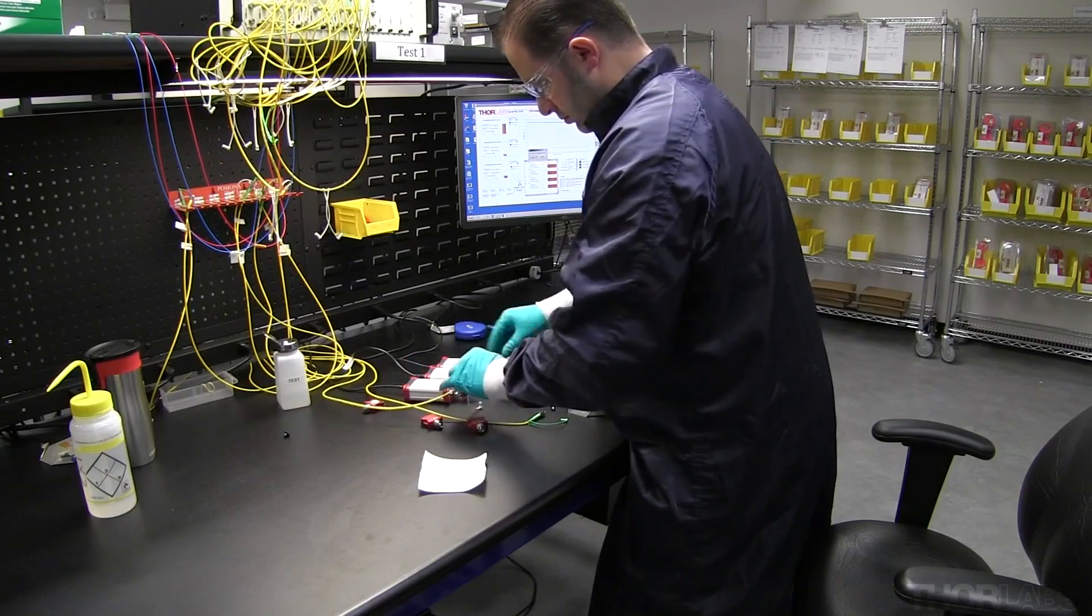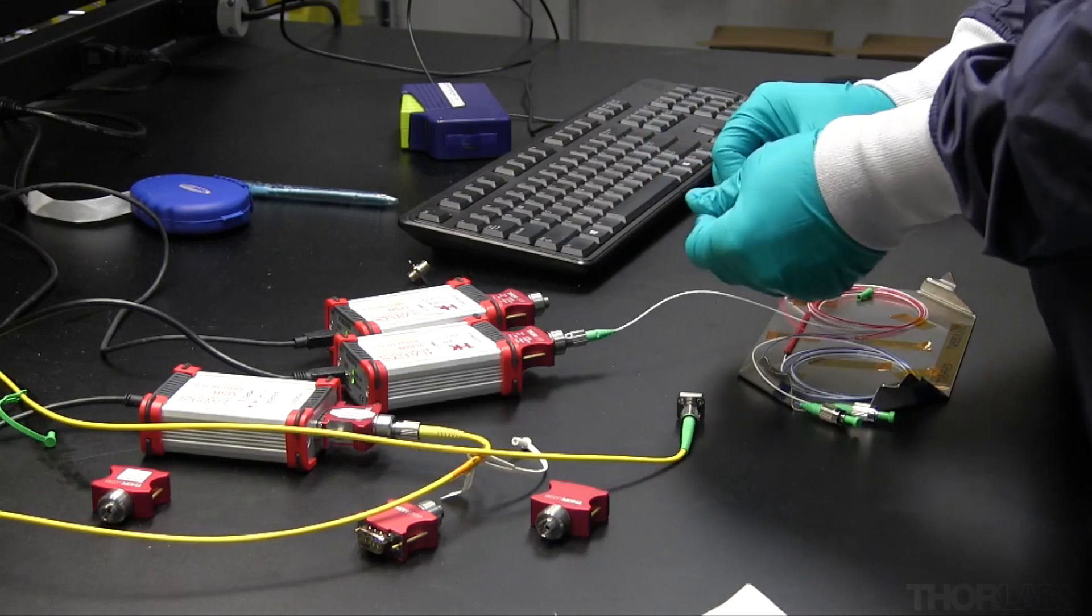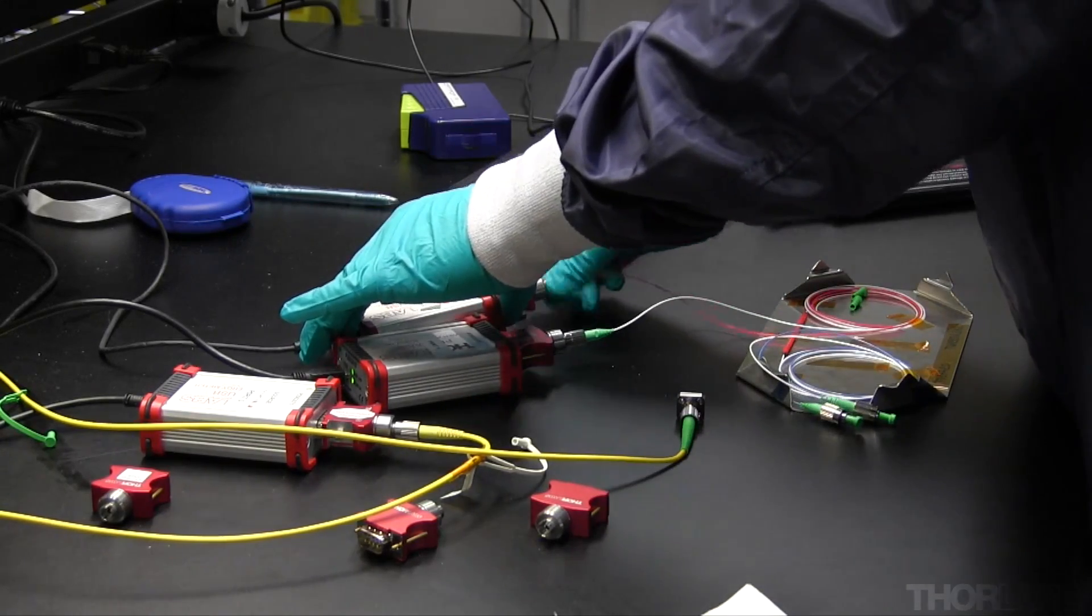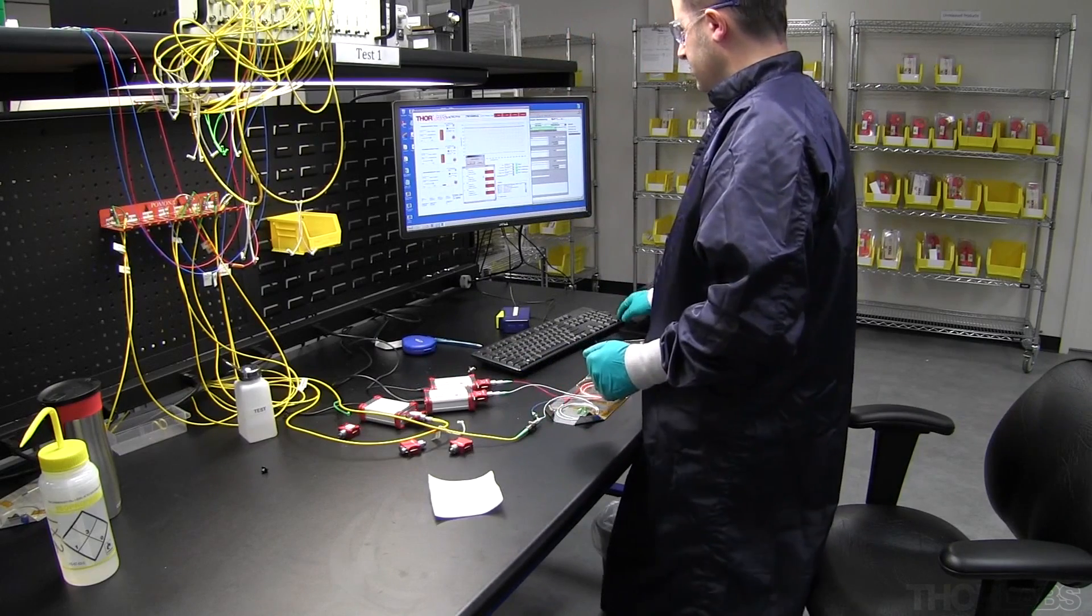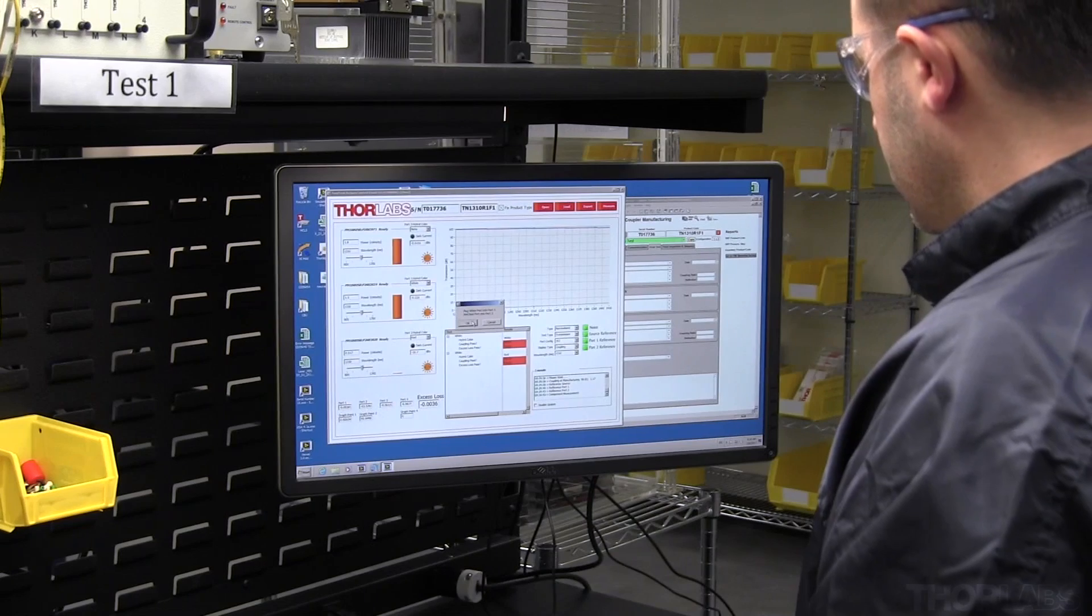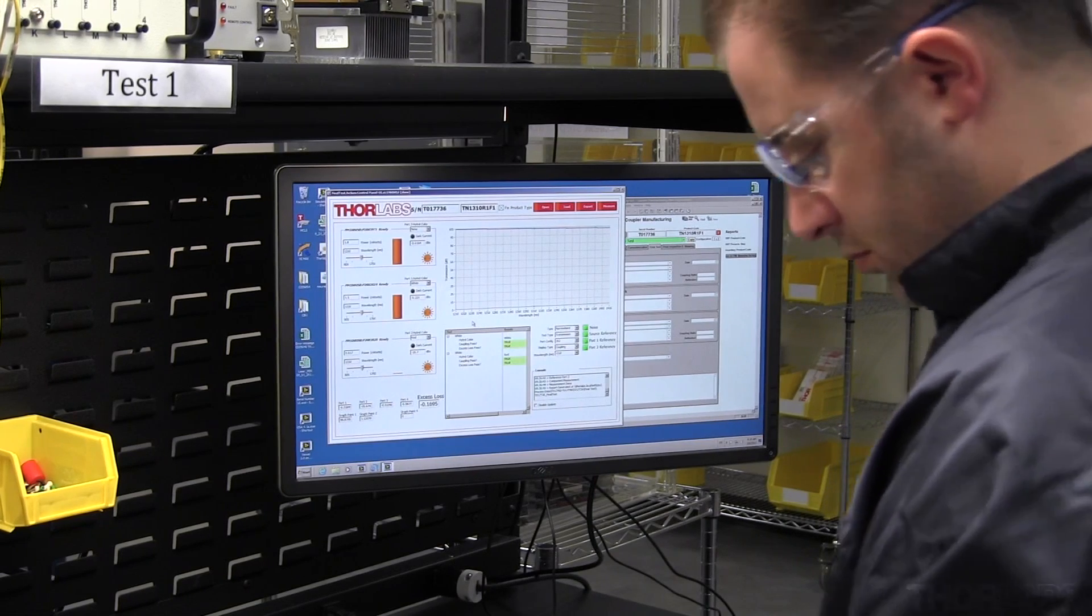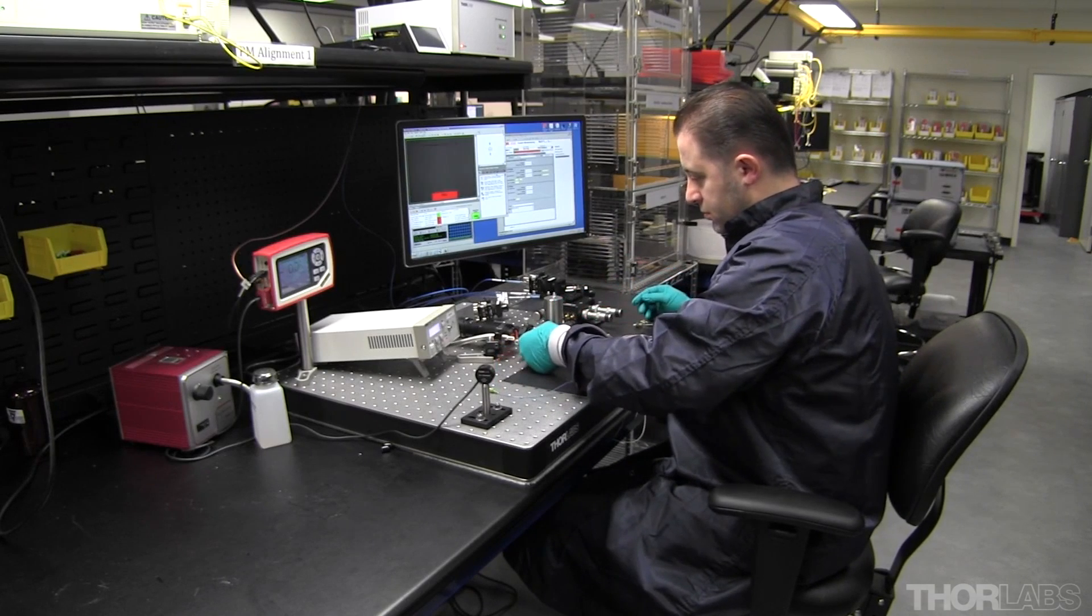Our fiber couplers and WDMs come in a variety of splitting ratios and wavelength channel separations. After the couplers fully assembled, a station built from Thorlabs components is used to compare an input beam of appropriate wavelength to the output from the coupler ends. The coupling ratio, insertion loss, excess loss, and uniformity are recorded, stored, and printed on datasheets shipped with each item.